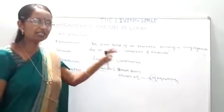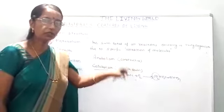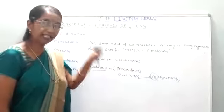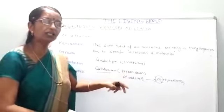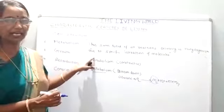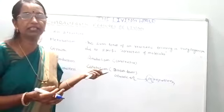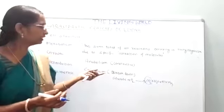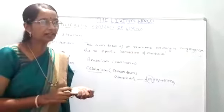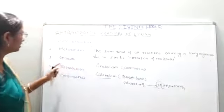Every living organism must exhibit this character. Growth, reproduction, consciousness, and other characteristic features are all the result of metabolism. If metabolism is not occurring in the body of the cell or organism, then growth, reproduction, and other characteristic features will not take place in the living organism.